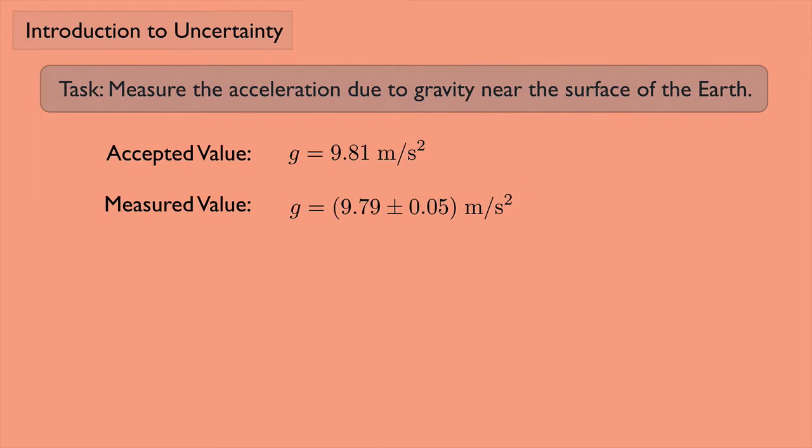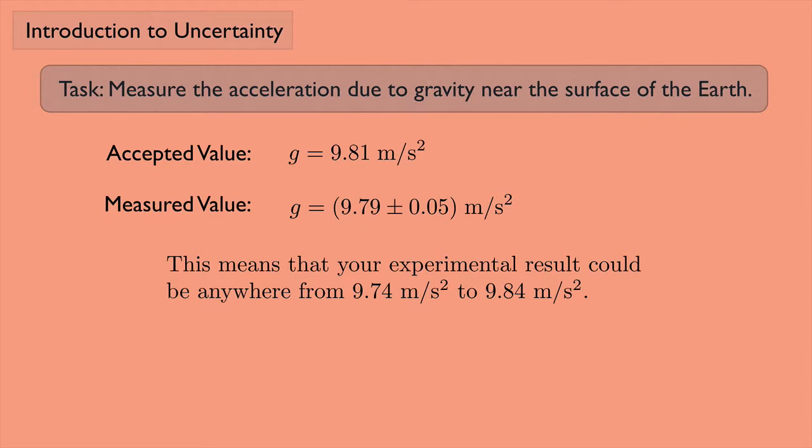The measured value of g is 9.79 plus or minus 0.05 meters per second squared. So what does that mean, the plus or minus? This means that your experimental result could be anywhere from 9.74 meters per second squared to 9.84 meters per second squared.